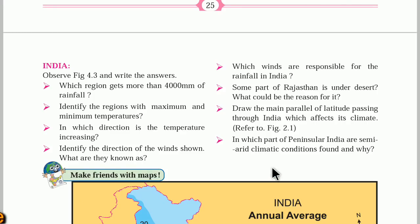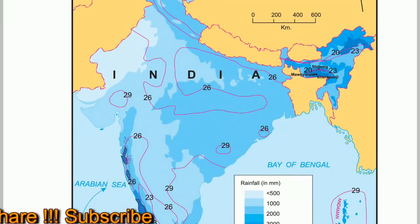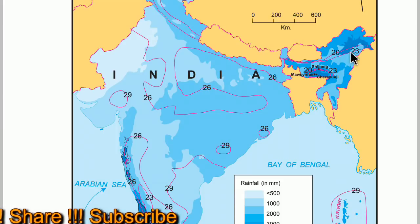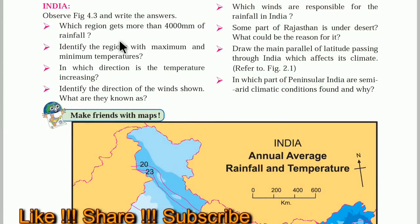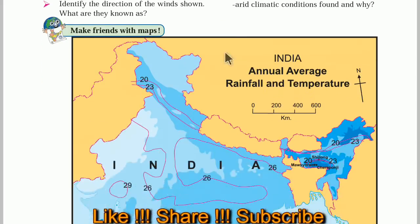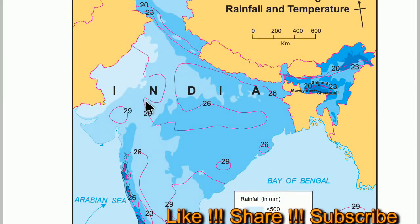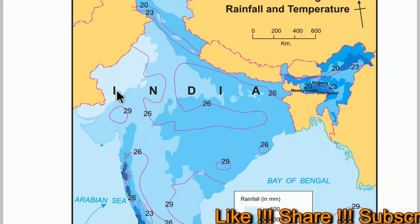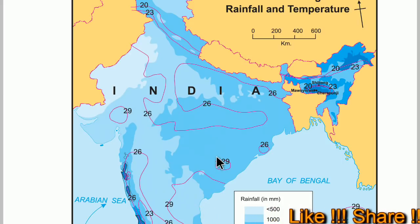Let us answer some questions regarding India. Which region gets more than 4000 mm of rainfall? The region getting more than 4000 mm of rainfall is the western coast and Northeast India. Identify the region with maximum and minimum temperature. Maximum temperature, at 29 degrees, is in parts of Gujarat and Madhya Pradesh.